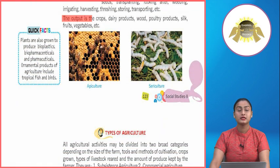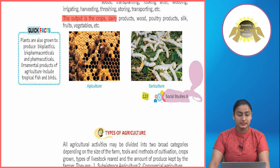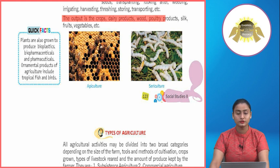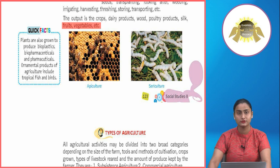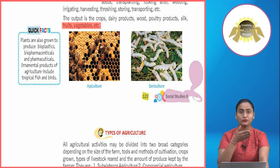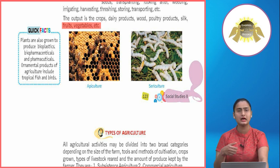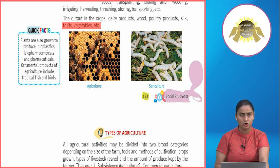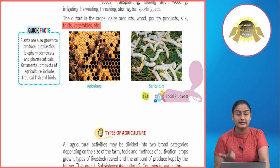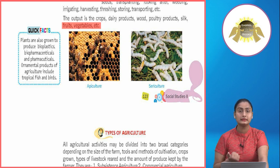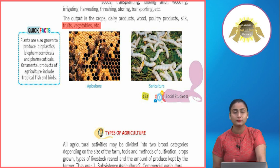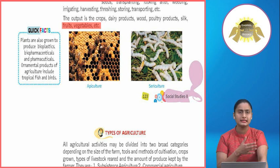The output of agriculture is crops, dairy products, wood, poultry products, silk, fruits, vegetables, etc. The outcome includes different types of crops, dairy products, wood, timber, and cotton — all are results of agriculture.